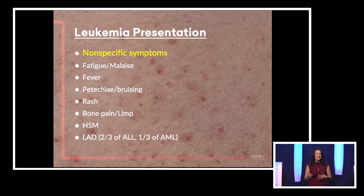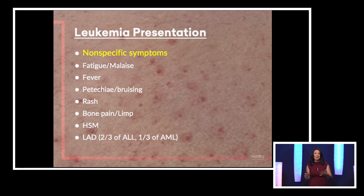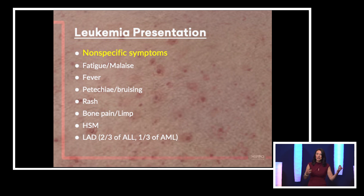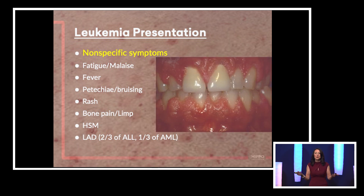The last systemic presentation to think about in kids — and unfortunately we make this diagnosis more often than we'd like — is leukemia. Leukemia often presents with a nonspecific rash. These patients have often seen their primary doctor a couple of times or even come to the ED with very vague malaise. They'll have a little petechial bruising, may have bone pain, lymphadenopathy, or hepatosplenomegaly. Look inside the mouth for an enanthem or gingival hyperplasia, which is associated specifically with AML.